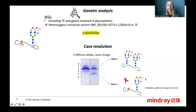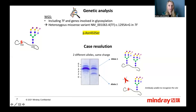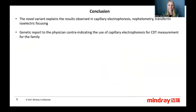Moreover, the antibody of the immunonephelometric method is unable to recognize this site and cannot bind. Overall, the elevation of the 2-sialotransferrin seen here is not due to alcohol consumption. This novel variant explained the results observed in capillary electrophoresis, nephelometry, and isoelectric focusing with and without neuraminidase. A genetic report was sent to the physician to counter-indicate the use of capillary electrophoresis for CDT measurement of the whole family.